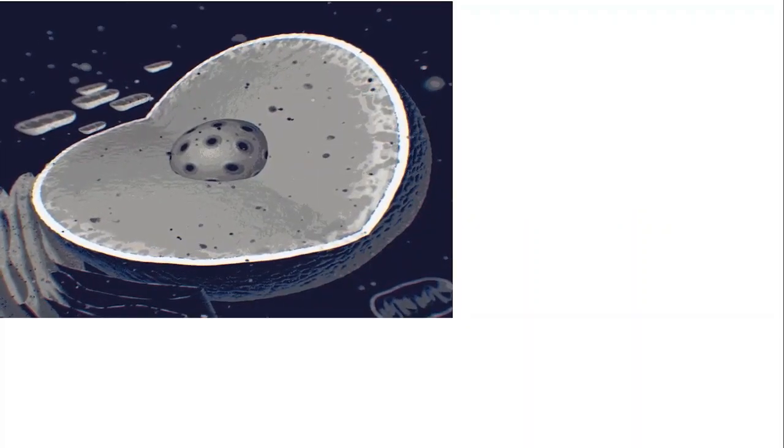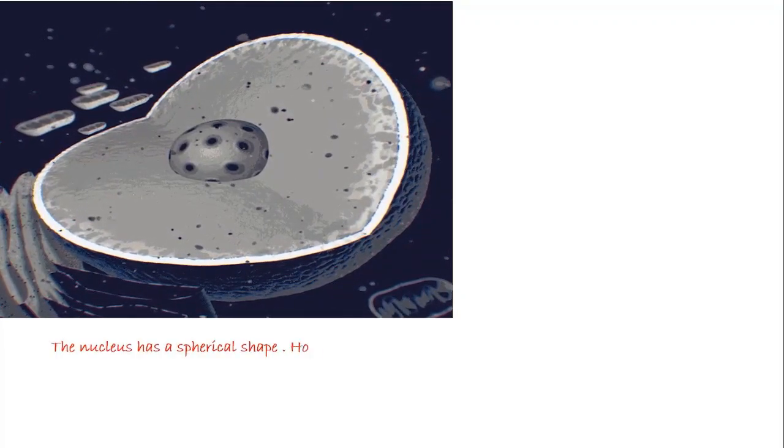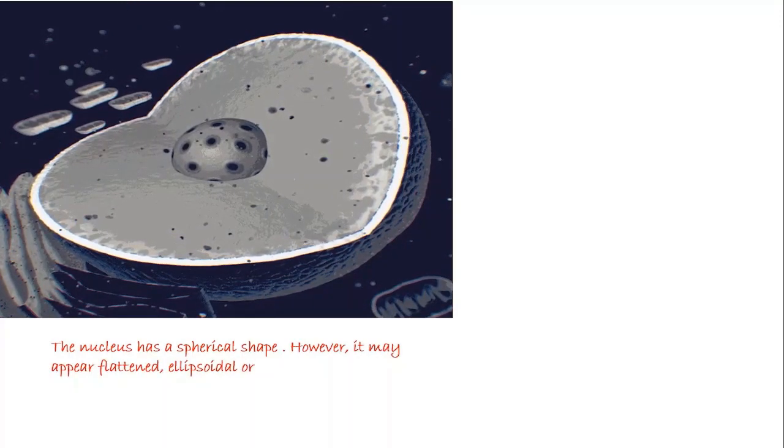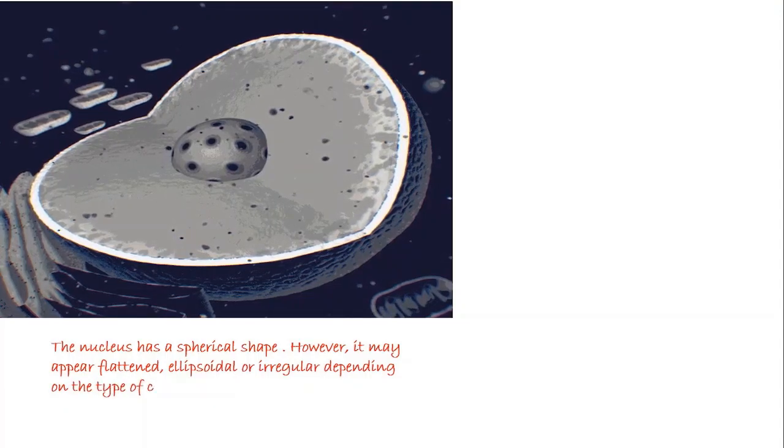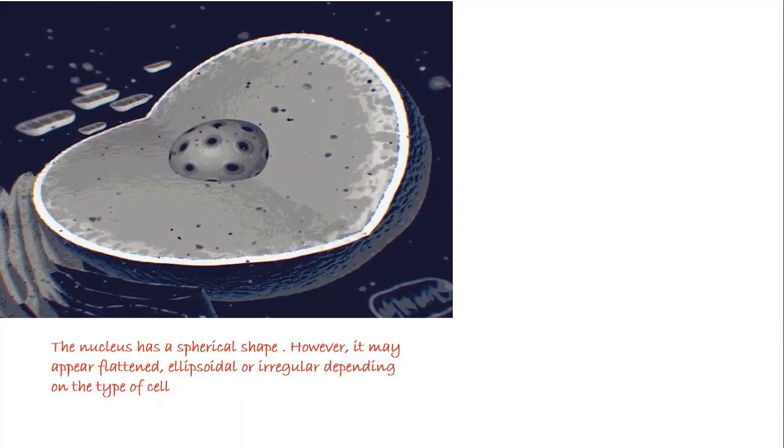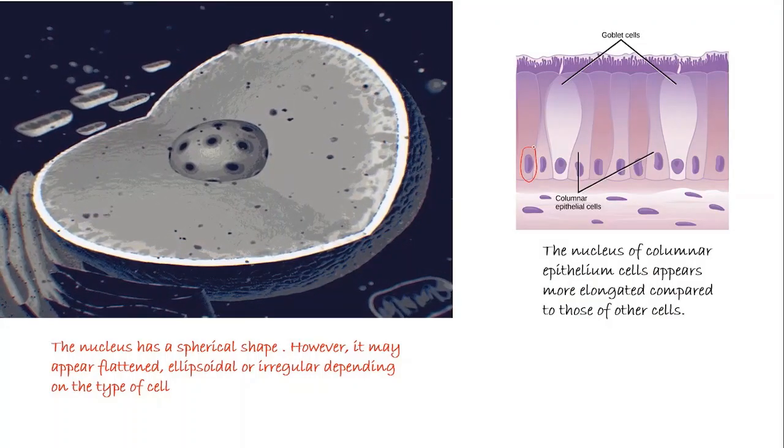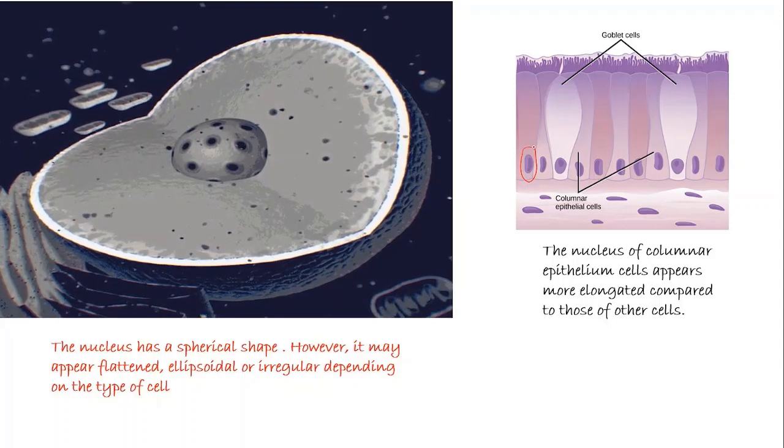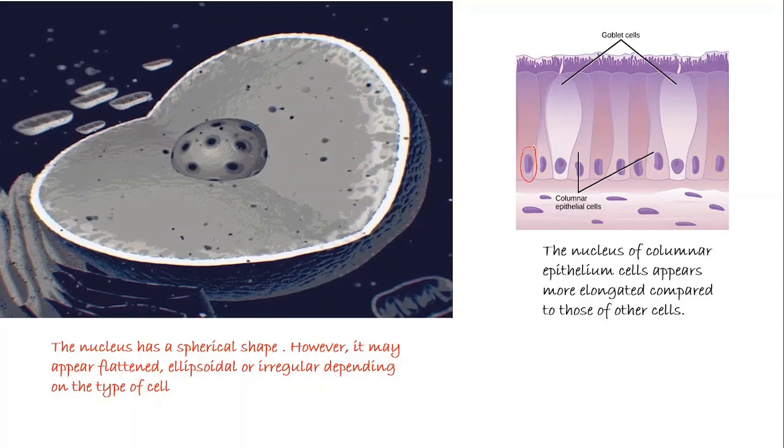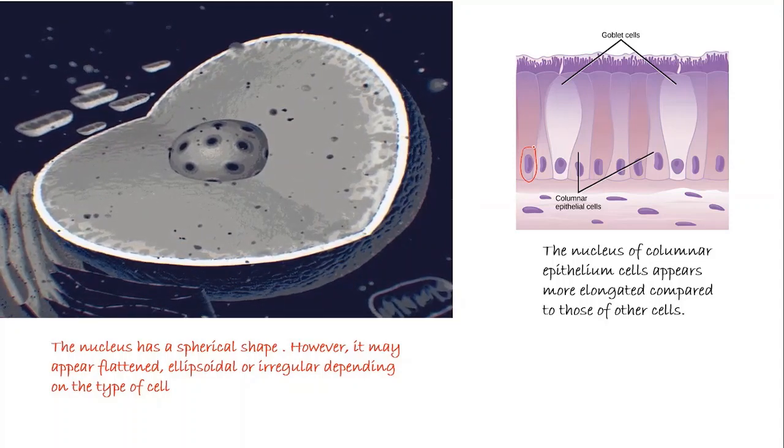Next, we can see the structural organization of the nucleus. In general, the nucleus has a spherical shape. However, it may appear flattened, ellipsoidal or irregular depending on the type of cell. For instance, the nucleus of columnar epithelial cells appears more elongated compared to those of other cells. The shape of a nucleus may also change as the cell matures.